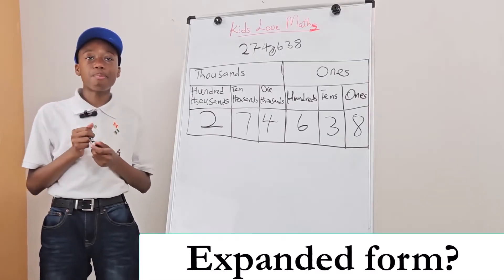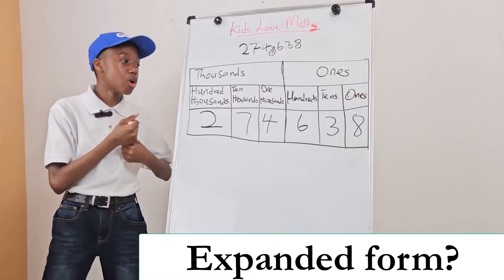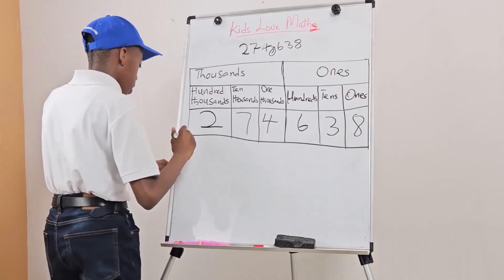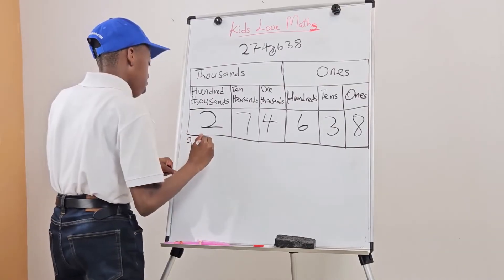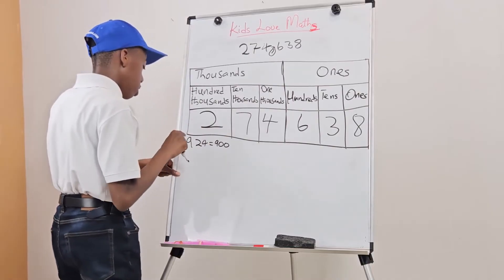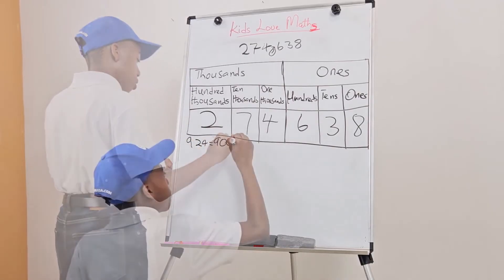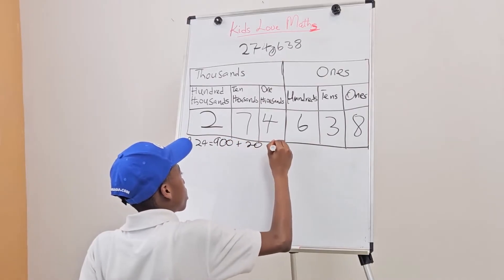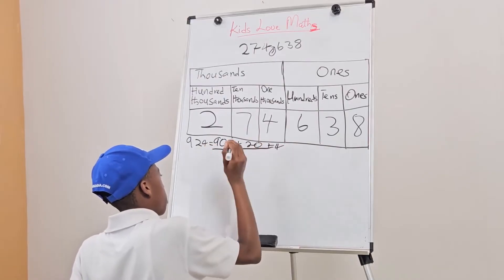Does anybody know what expanded form is? Expanded form is when you take a number and divide it by place value. For example, 900 — because 9 is in the hundreds place — plus 20, plus 4. This is how we write expanded form.